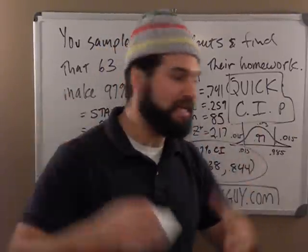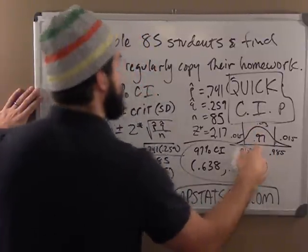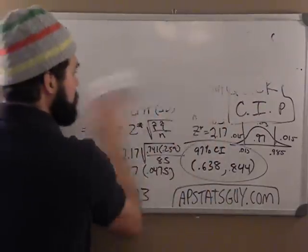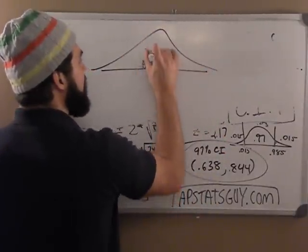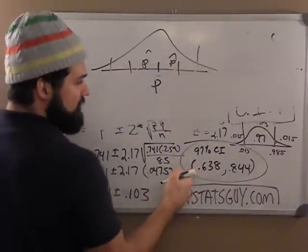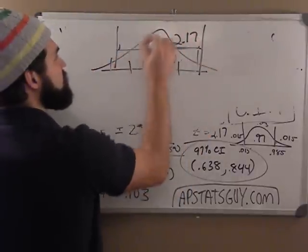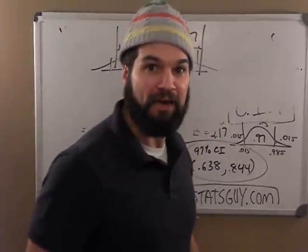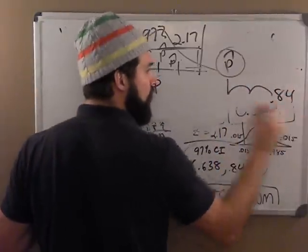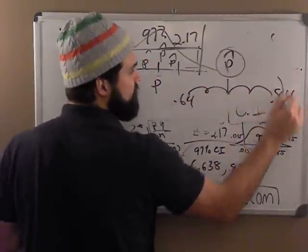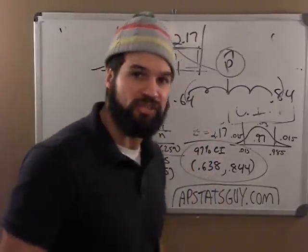Remember what a confidence interval is. You are standing at some p-hat. This thing right here, your p-hat isn't in the middle of this. This thing is just saying there's some p out there. There's some true p. And around that true p is a bunch of p-hats. And you know that 97% of them, of the p-hats are within 2.17 standard deviations. But you don't know which p-hat you have. You might have this p-hat. And when you went up two standard deviations to 84, and down two standard deviations to 64, maybe you totally missed the true p. Maybe the true p was really 58. And you missed it.